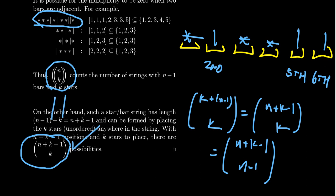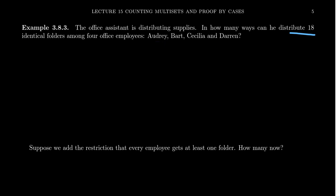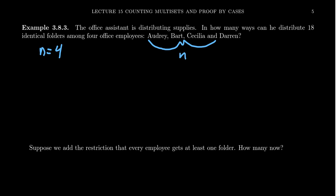Therefore, we can use this formula to solve problems about multi-subsets. Consider this example: an office assistant is distributing supplies. In how many ways could this assistant distribute 18 identical folders among four office employees — Audrey, Bart, Cecilia, and Darren? Because there are 18 folders and four employees, and the folders are indistinguishable from each other, this is a multi-choose problem where n equals 4 (the number of people) and k equals 18 (the number of folders).